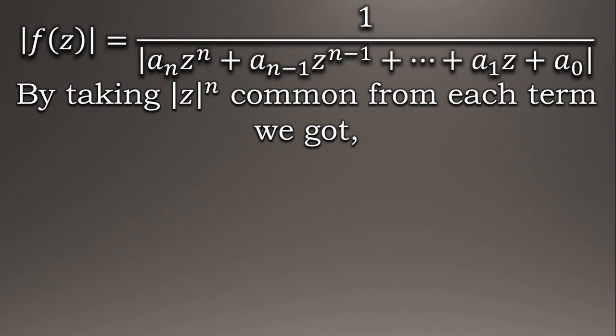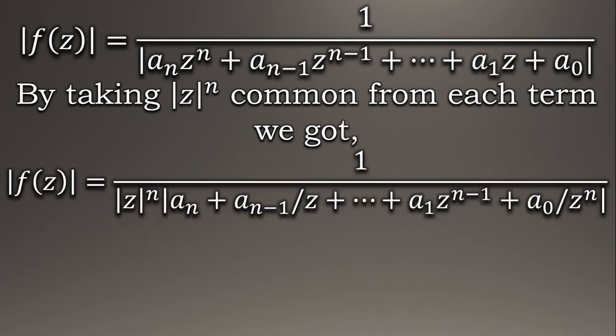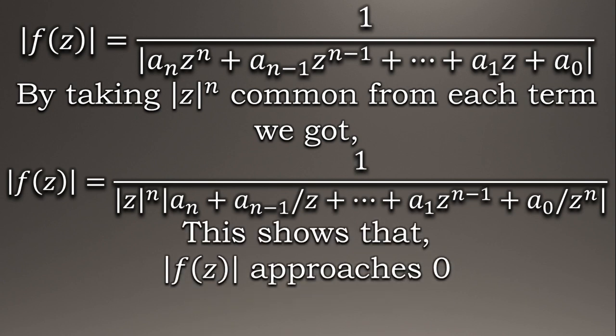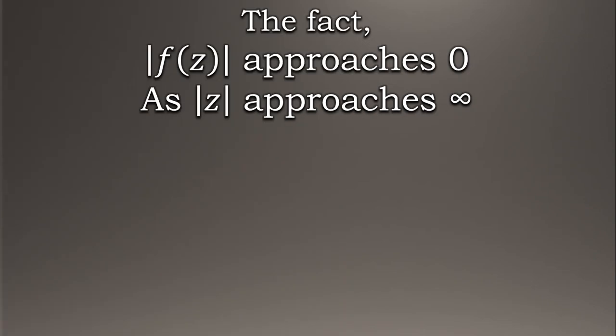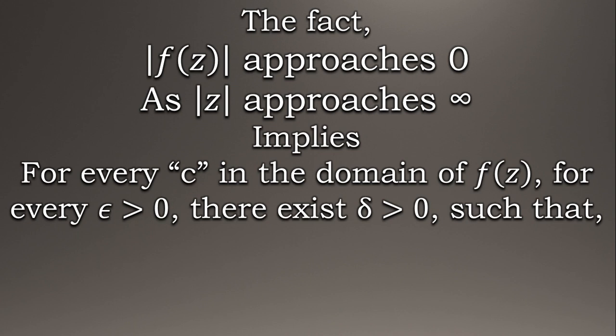Now this clearly shows that if |z| approaches infinity, |f(z)| approaches zero, which in turn implies that for every c—c is any point in the domain of f(z)—for every epsilon greater than zero, there exists delta greater than zero.